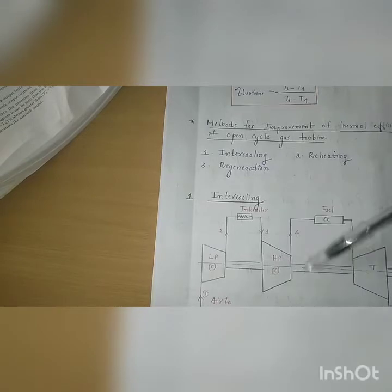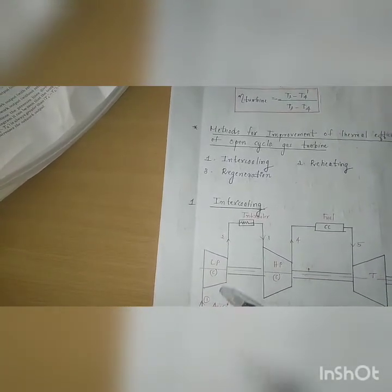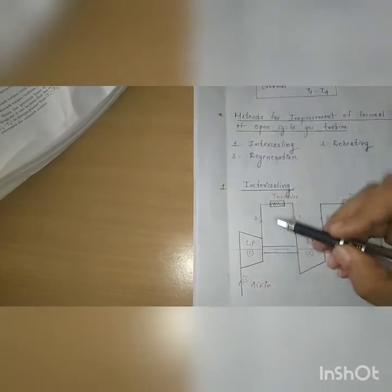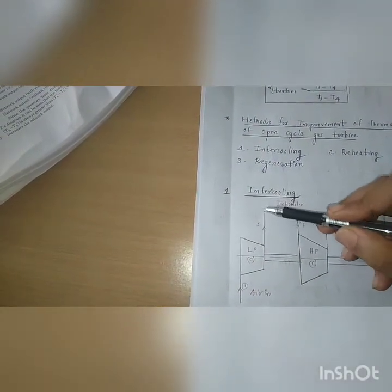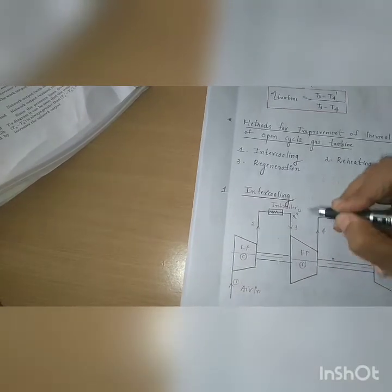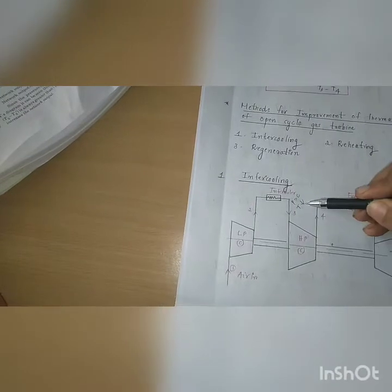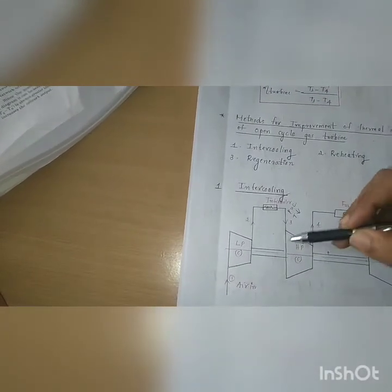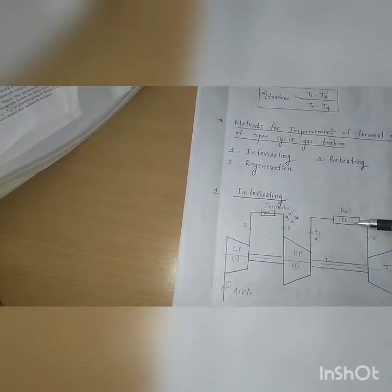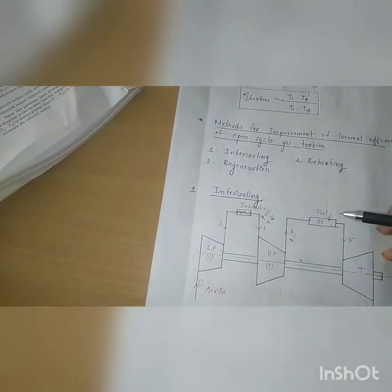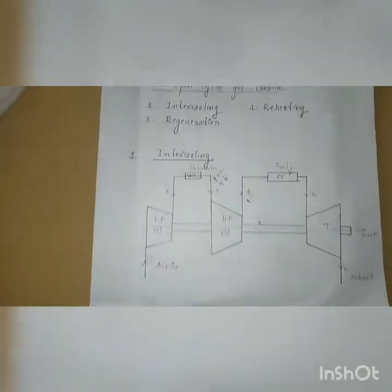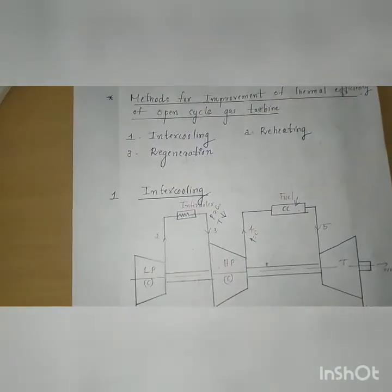The work absorbed from the turbine during compression is very low. The low pressure compressor absorbs air and exits to the intercooler. In the intercooler, pressure is increasing and temperature is also increasing. The intercooler reduces the temperature while pressure remains constant. This reduced temperature at constant pressure enters the high pressure compressor, where pressure increases before entering the combustion chamber. Due to the intercooling process, the work taken from the turbine by the compressor can be reduced.